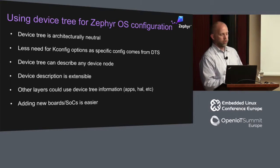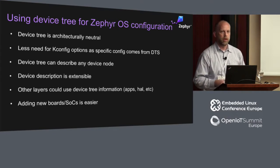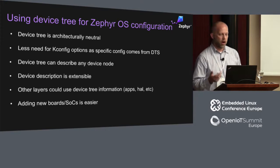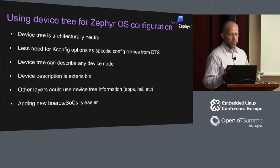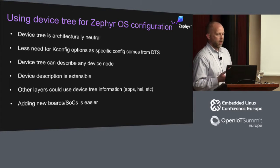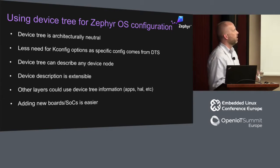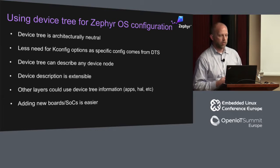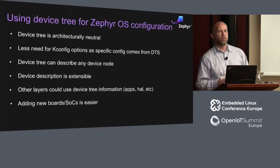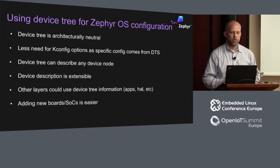One: Device Tree is architecturally neutral — it doesn't matter if you're on ARM, x86, or ARC. Two: we would need fewer kconfig options because the configuration information would actually be described in the DTS. Instead of having things like SRAM address, number of UARTs, base addresses, IRQs, and all that stuff in kconfig, you can actually get that out of the DTS. You don't need a kconfig option for that.